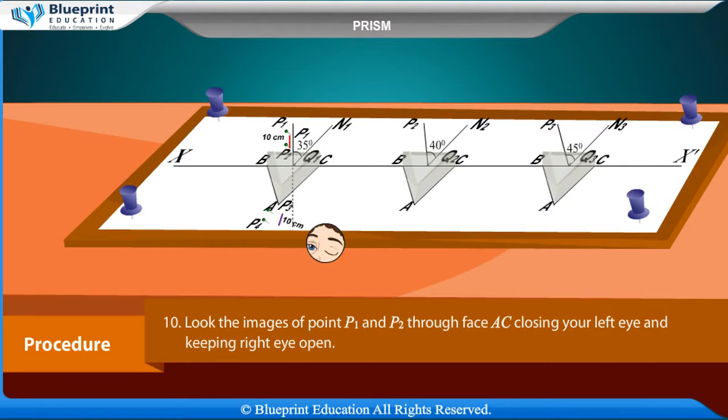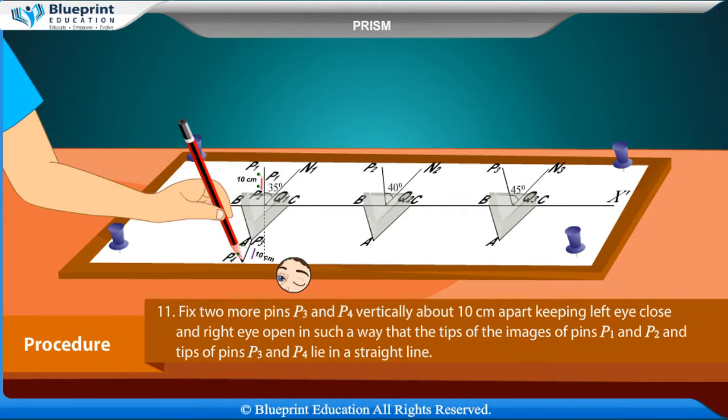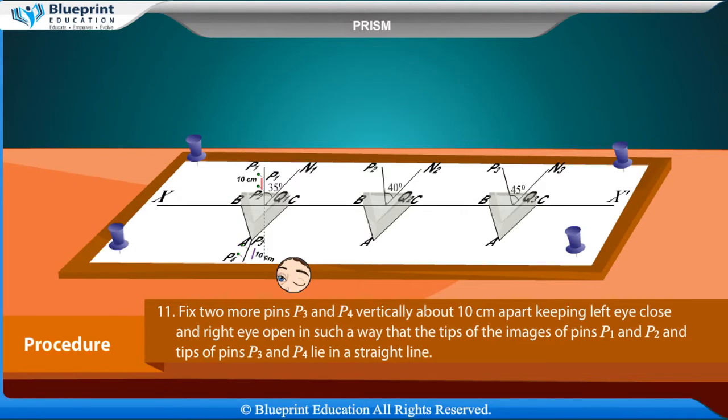Look at the images of pins p1 and p2 through face AC, closing your left eye and keeping right eye open. Fix two more pins p3 and p4 vertically about 10 cm apart, keeping left eye closed and right eye open, such a way that the tips of the images of pins p1 and p2 and tips of pins p3 and p4 lie in a straight line.